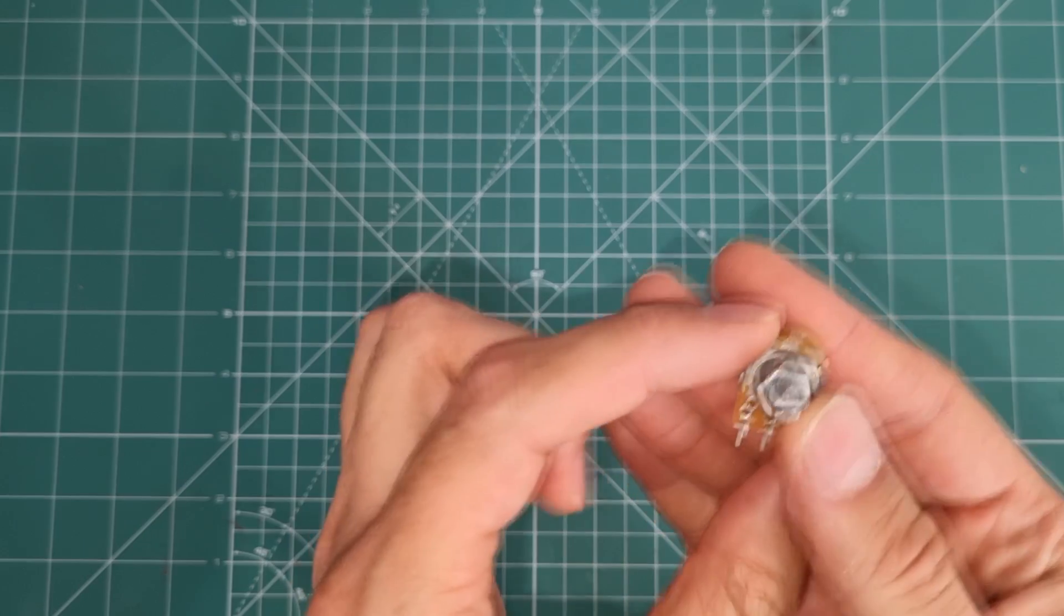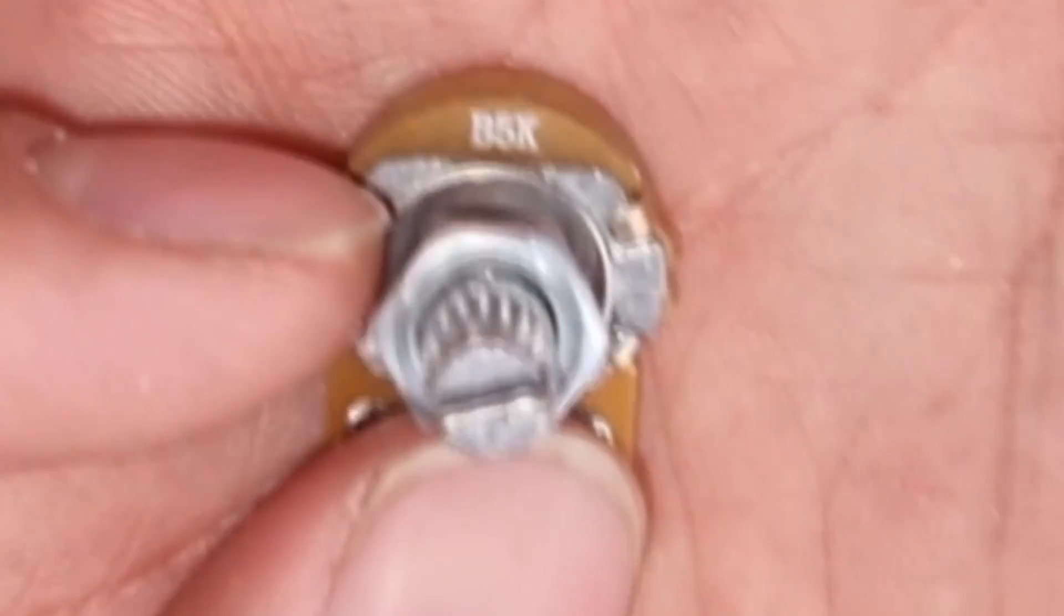For example, this potentiometer is five kilo ohms.